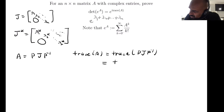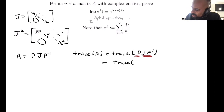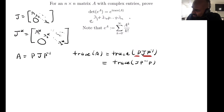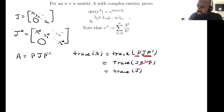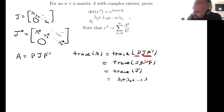There's an interesting fact that the trace of two matrices multiplied together doesn't depend on the order. Taking one matrix to be P and the other to be J·P⁻¹, the trace of P·J·P⁻¹ equals the trace of J·P⁻¹·P. Observing that P⁻¹·P = identity, we're left with the trace of J. The trace of J is the sum of its diagonal elements, which equals λ₁ + λ₂ + ... + λₙ.